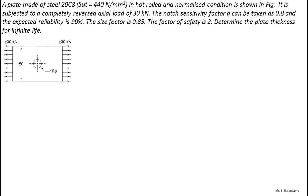Here we have the problem: a plate made of steel 20C8, a plain carbon steel having ultimate tensile strength 440 N/mm² in hot rolled and normalized condition. It is subjected to a completely reversed axial load of 30 kilo newton. The notch sensitivity factor q is 0.8, expected reliability is 90%, size factor is 0.85, and factor of safety is 2. We have to determine the plate thickness.